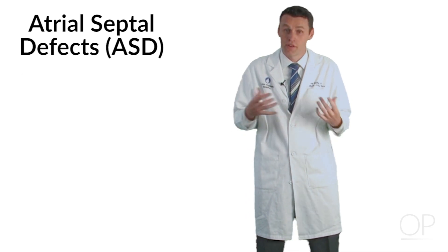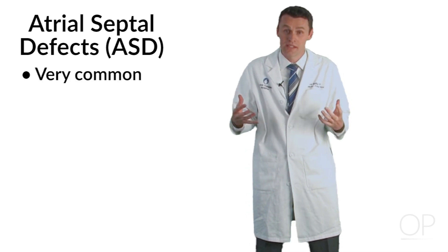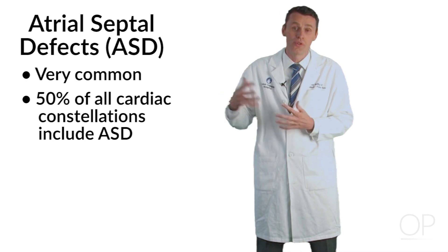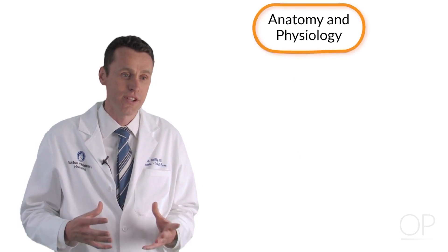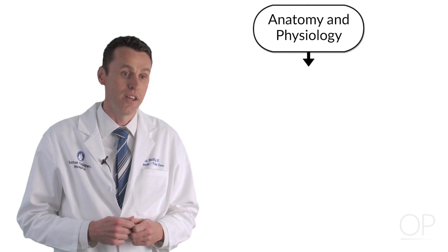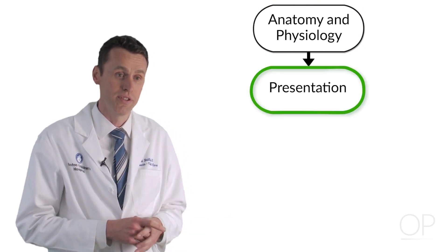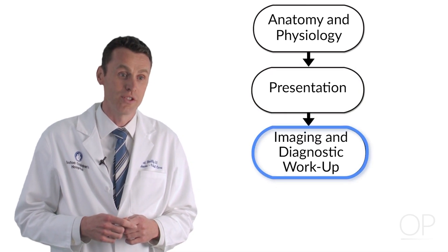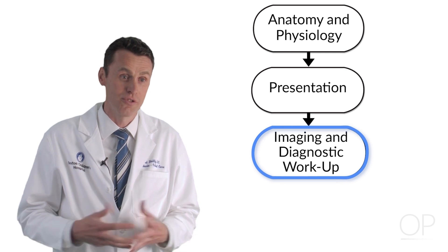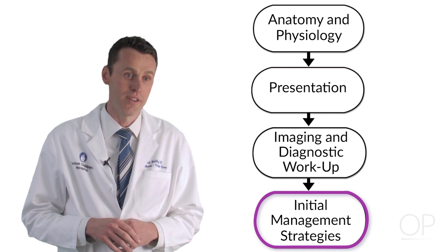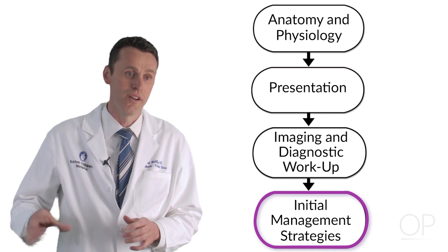Atrial Septal Defects are very common overall and they're commonly seen in other cardiac lesions. Up to 50% of all cardiac constellations include an Atrial Septal Defect. We're going to talk initially about the anatomy and the physiology of the different types, followed by the usual presentation, the imaging and diagnostic modalities, and initial management strategies for patients with Atrial Septal Defects.